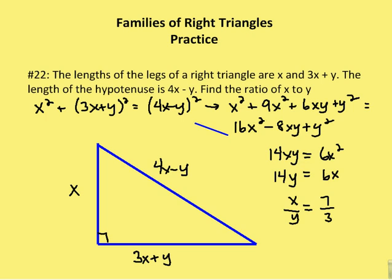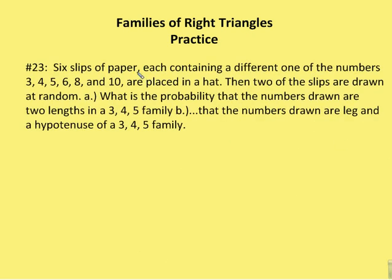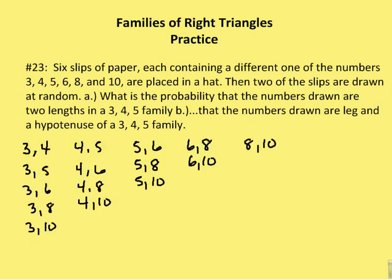Next problem. I have 6 slips of paper, each containing a different one of the numbers 3, 4, 5, 6, 8, and 10. They're placed in a hat, then 2 of the slips are drawn at random. What is the probability that the numbers drawn are two lengths in the 3, 4, 5 family, and B, that the numbers drawn are a leg and a hypotenuse of the family.